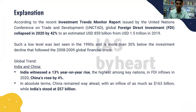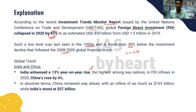According to the Investment Trends Monitor Report by UNCTAD, global FDI collapsed by 42% — an unprecedented fall. Such a low level was last seen in the 1990s and is more than 30% below the investment decline following the 2008–2009 global financial crisis, making the current situation worse. India witnessed a 13% year-on-year rise — the highest among key nations — and China's FDI rose by 4%, but in absolute terms China remained way ahead with an inflow of 163 billion dollars compared to India's 57 billion dollars.